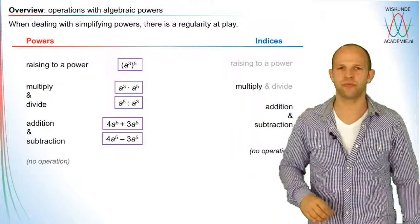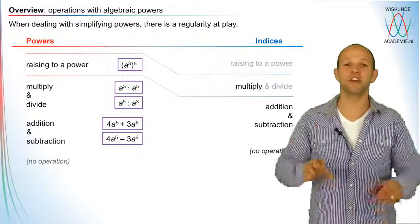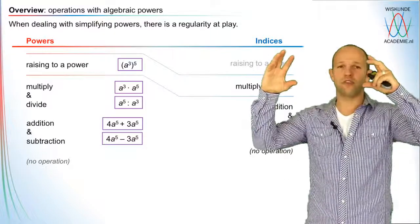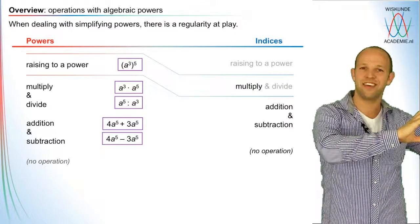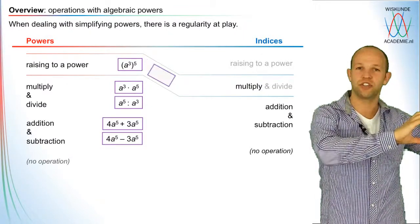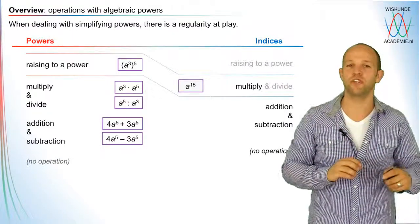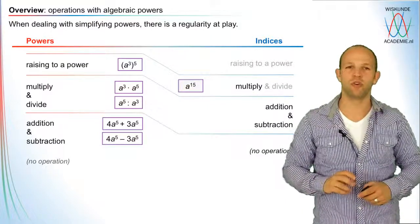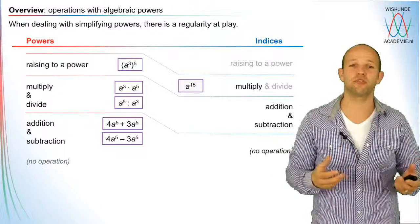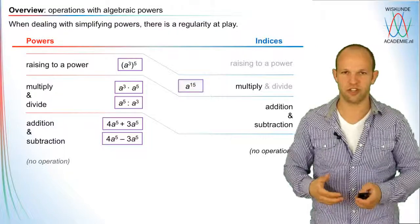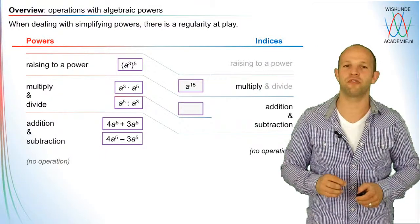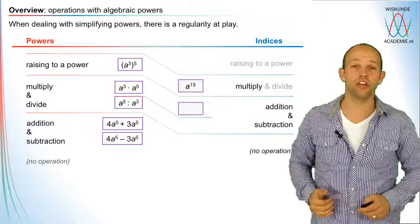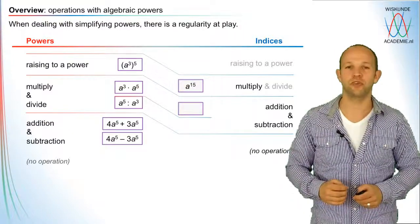How do these two relate to each other? Both have the same order of operations: raise to a power, multiply and divide, addition and subtraction, then nothing. Now if you raise to a power, you actually go one step lower in the order of the indices. So raising a power to a power means you multiply the indices — in this case multiplying 3 and 5, which gives you a to the power 15.